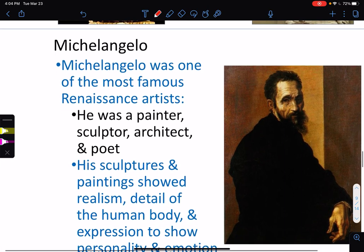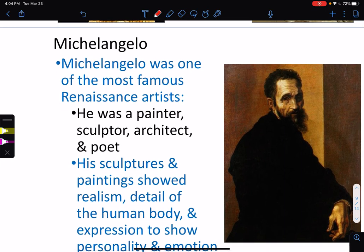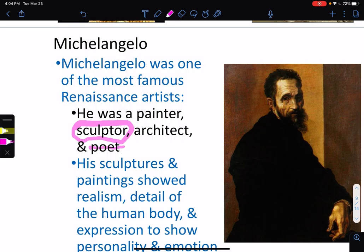We'll focus on Michelangelo a lot. Michelangelo was one of the most famous Renaissance artists. He was an artist, painter, sculptor, architect, and poet. A lot of people don't know that he wrote poetry as well. But he wanted to be known as a sculptor — that was his true calling. He has some of the most amazing paintings, but sculpting is where his passion was.